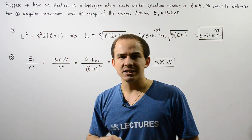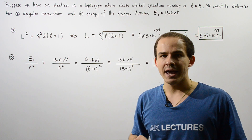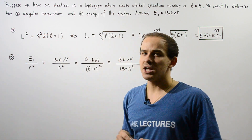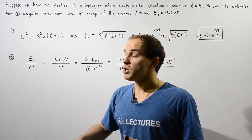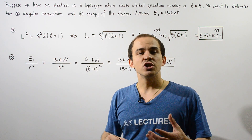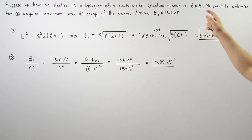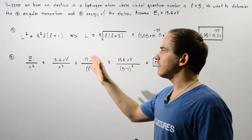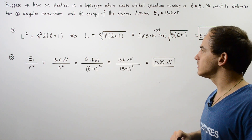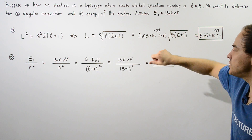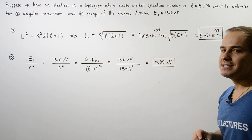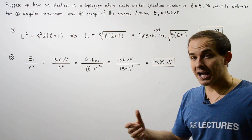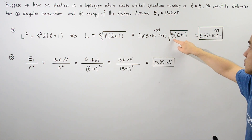To calculate the angular momentum of the electron we apply this equation. The magnitude of the angular momentum L squared is equal to h-bar squared multiplied by L multiplied by L plus one, where lowercase L represents the orbital quantum number — in this case lowercase L is equal to 5. Isolating L by taking the square root of both sides, we get L equal to h-bar multiplied by the square root of L times L plus 1, which is 5 times 6, giving us 30.